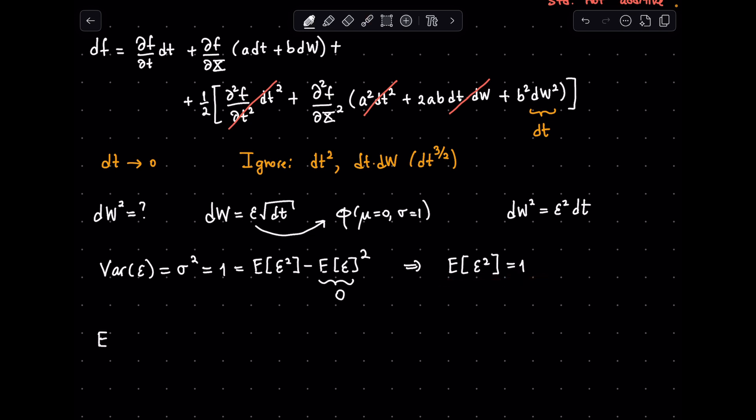Next, let's look at the expected value of the dw squared process, substituting its definition, then taking out the dt, then using the fact that the expected epsilon squared is 1, we get the result as dt.